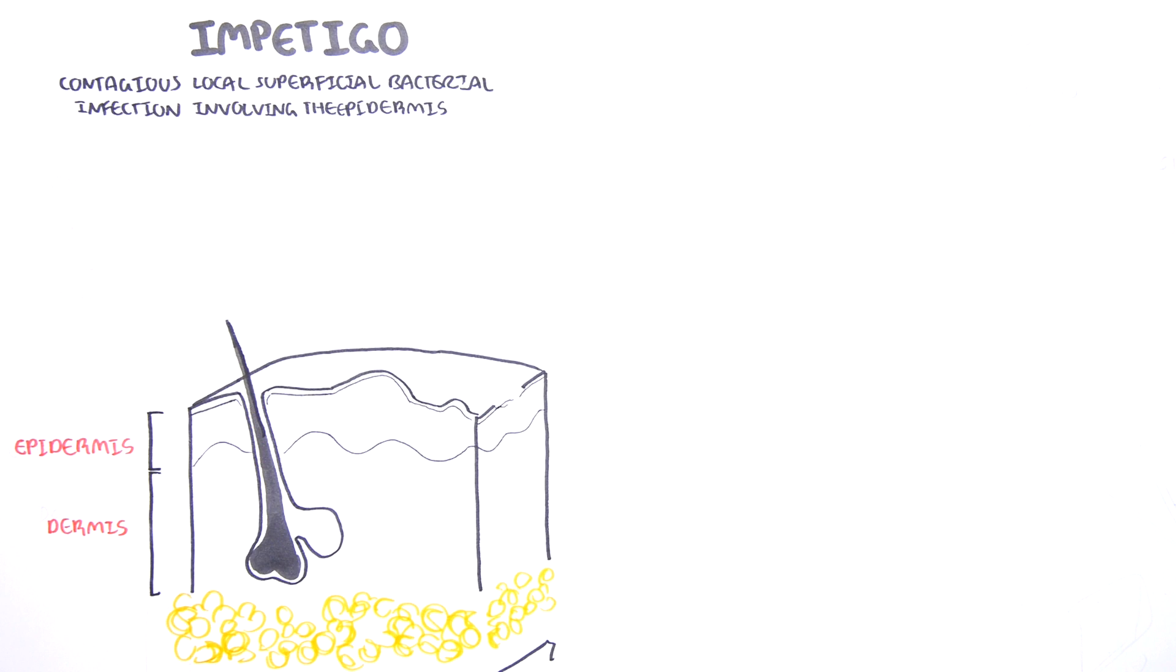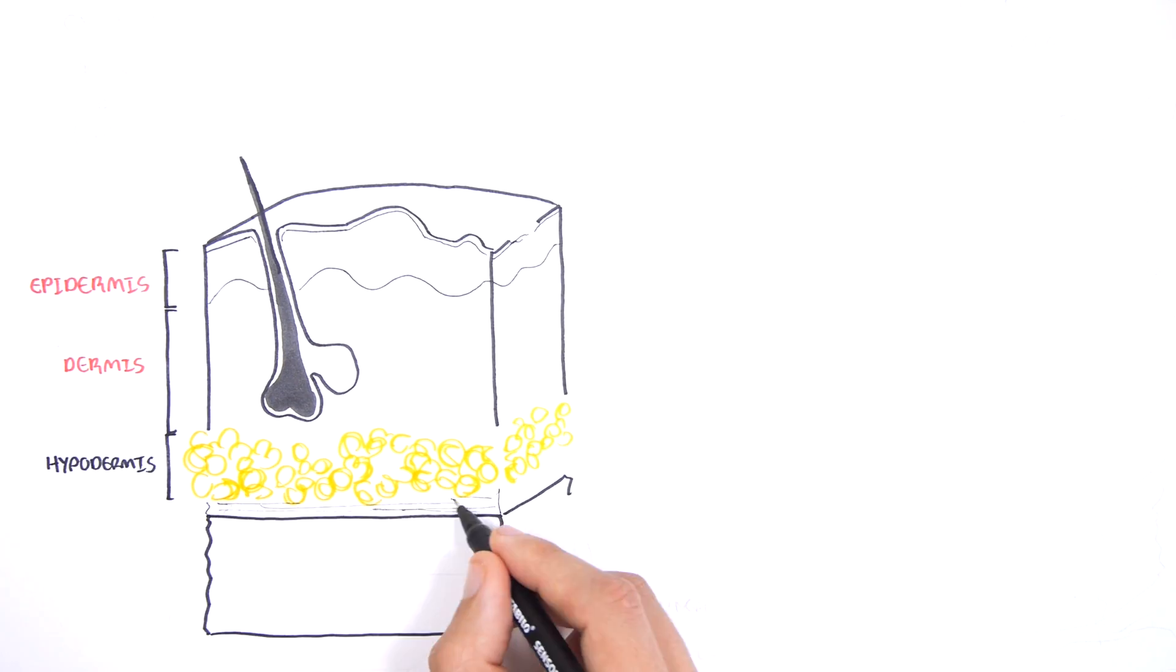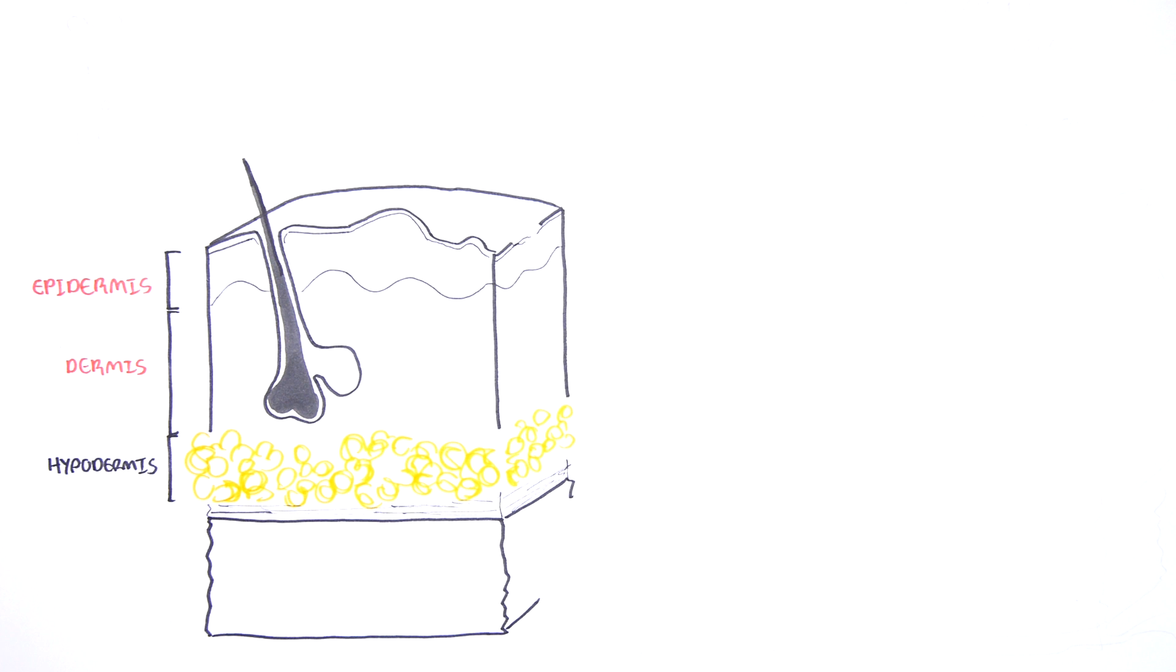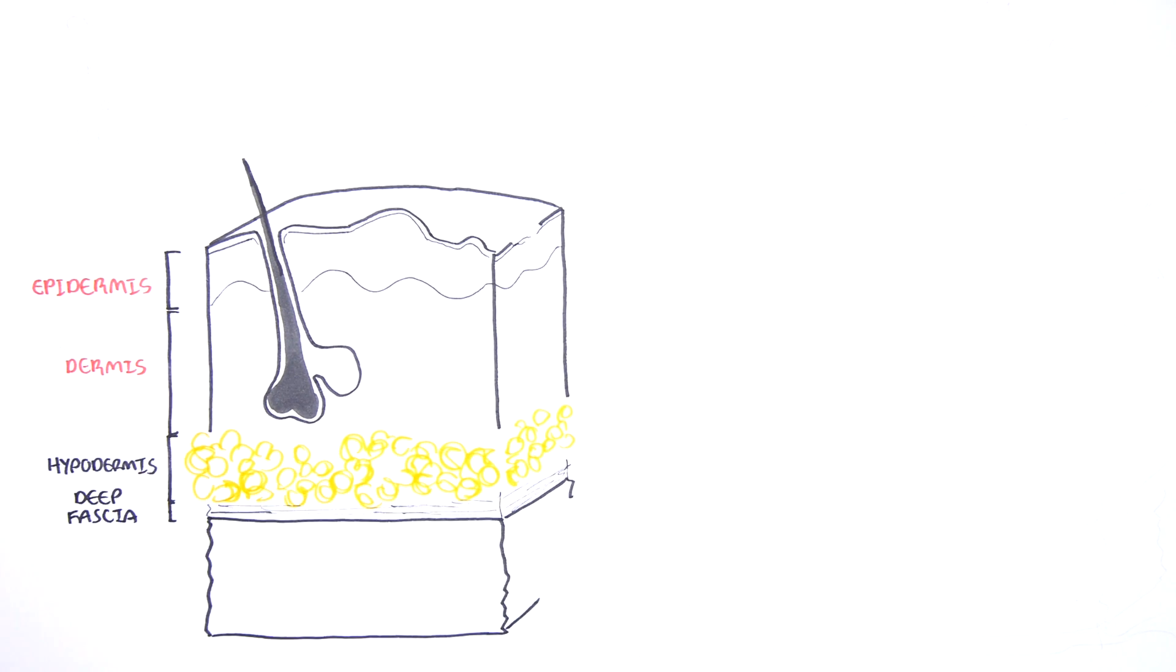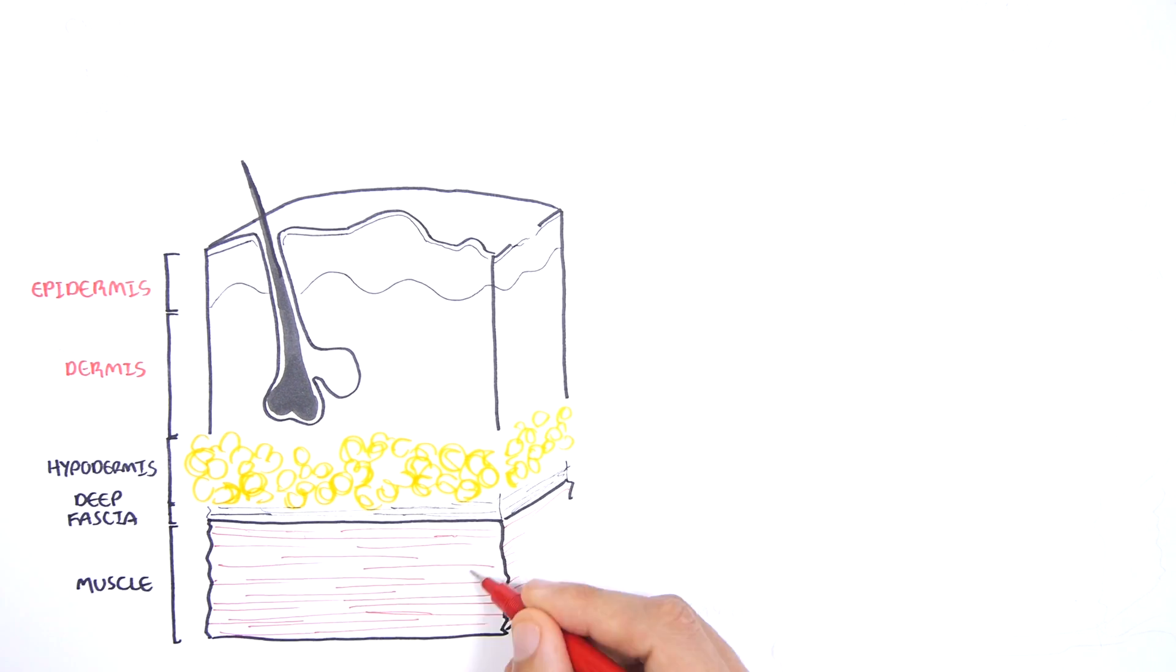Below the dermis, you have subcutaneous tissue, which makes up what's known as the hypodermis, which is also known as the superficial fascia. Below the superficial fascia, you have the deep fascia, which is a connective tissue layer which surrounds organs such as your muscle.